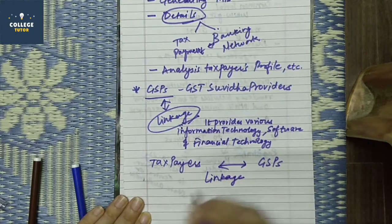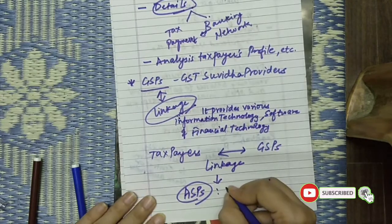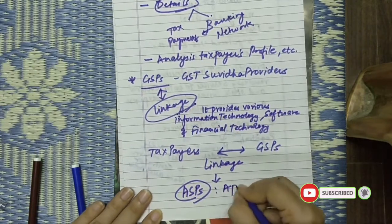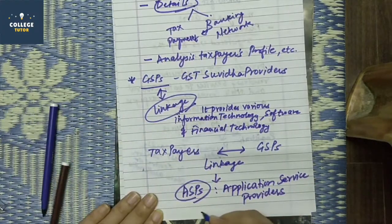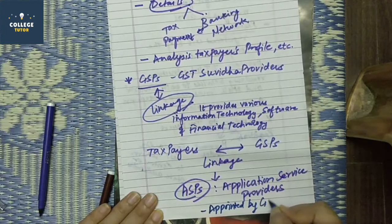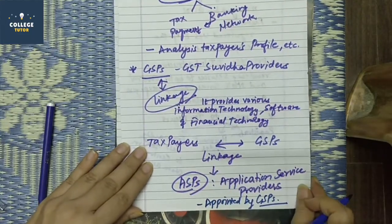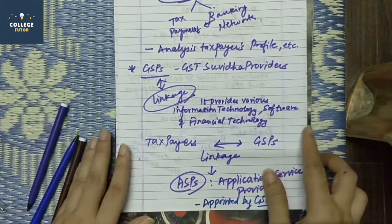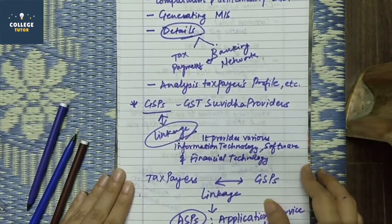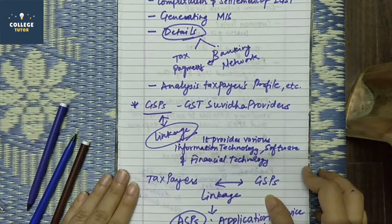Managing this linkage between GSPs and taxpayers is the work of ASPs — Application Service Providers. These providers are appointed by GSPs, so that the link between GSPs and taxpayers is maintained and all related activities are handled by Application Service Providers. That is the concept of GSTN.